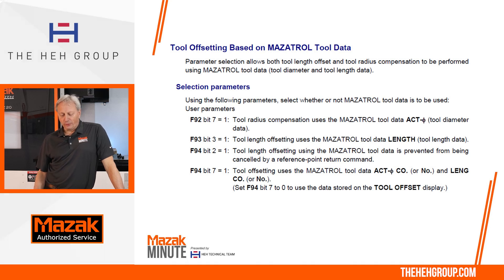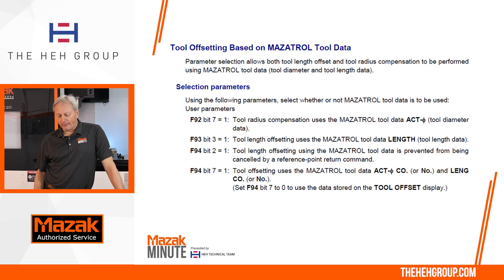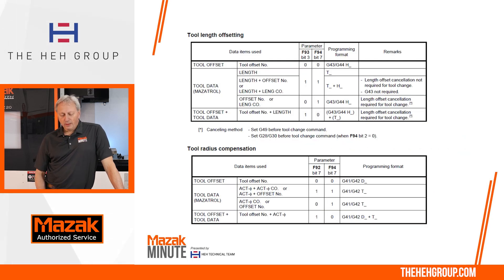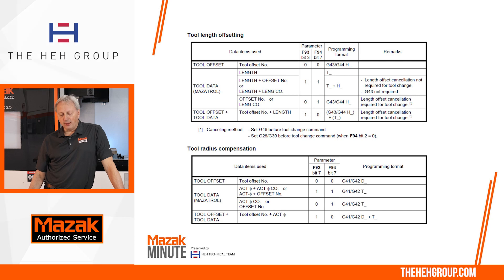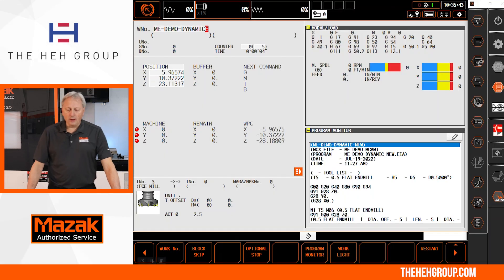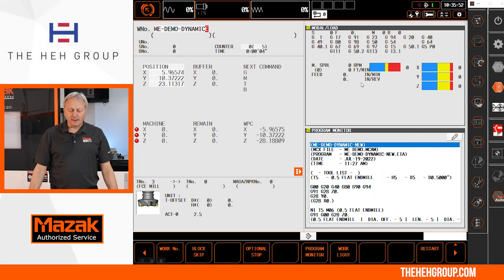There are four parameters I often use tied to the Mazatrol tool data page. One benefit is maintaining one tool length in one place, avoiding errors from forgetting to update it elsewhere. Other parameters deal with the actual diameter, and I'll often use wear comp where I program to the center of the tool and comp a small amount — maybe a few thousandths — in the negative or positive direction. The EIA manual has a section on tool length settings based on Mazatrol tool data, referencing parameters F93 bit 3, F94 bit 7 for tool length, and F92 bit 7, F94 bit 7 for tool radius.